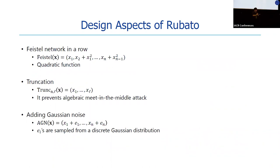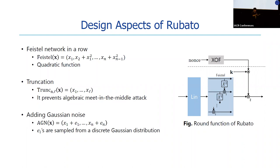For non-linear layers, we adopt Feistel-in-a-row, which is used in PASTA and is a quadratic invertible function. A quadratic function gives the least multiplicative depth for a fixed algebraic degree. In HERA, the round function is a cubic function to defend against the algebraic meet-in-the-middle attack, but for Rubato, truncation defends the algebraic meet-in-the-middle attack. Finally, adding Gaussian noise generates the keystream of Rubato. The round function consists of Feistel-in-a-row, a linear layer, and key addition.